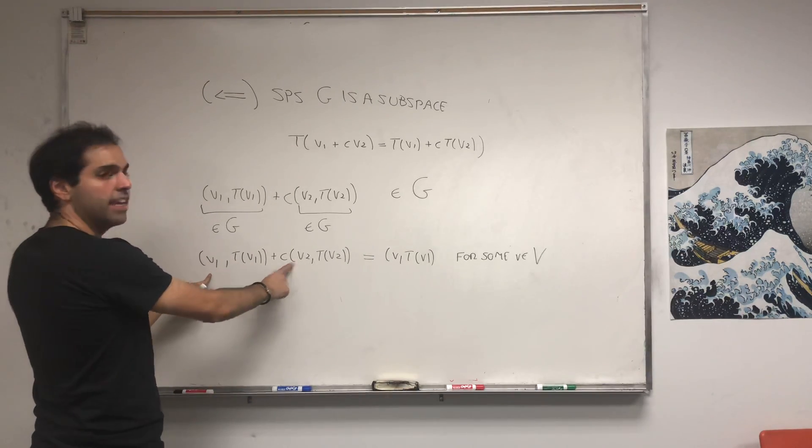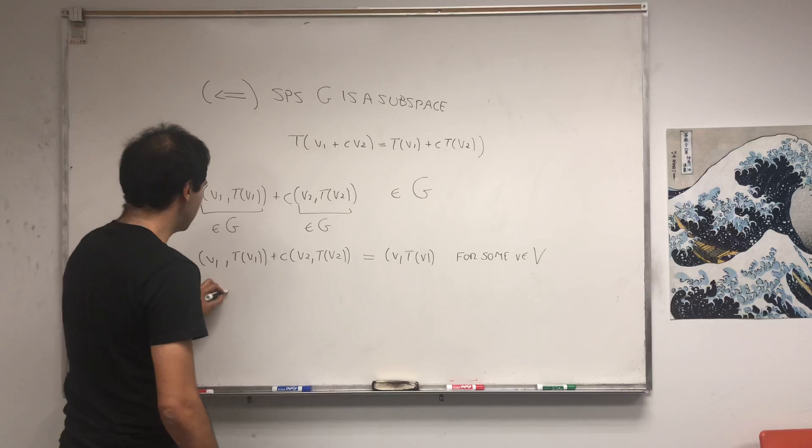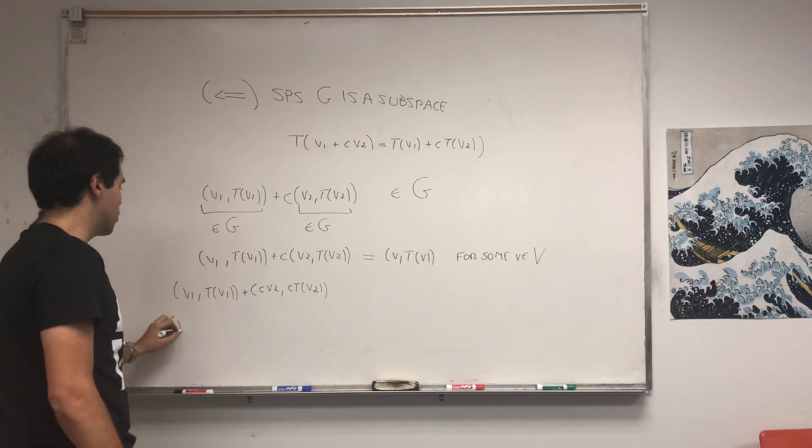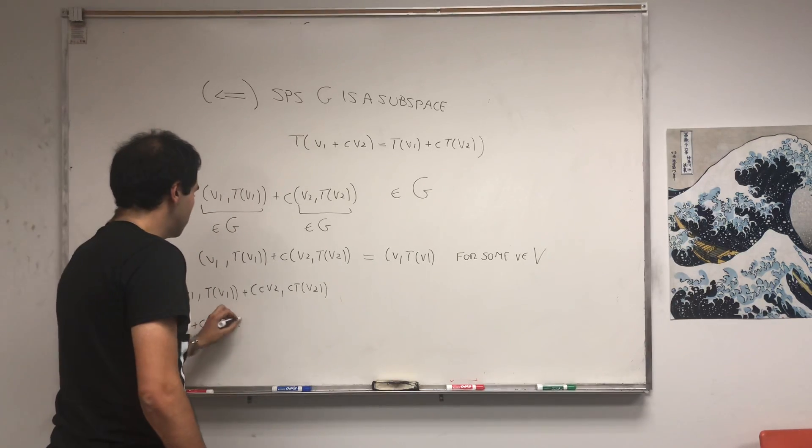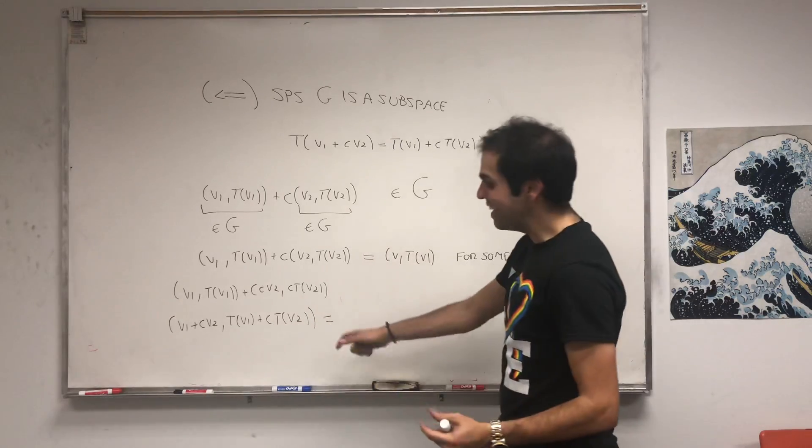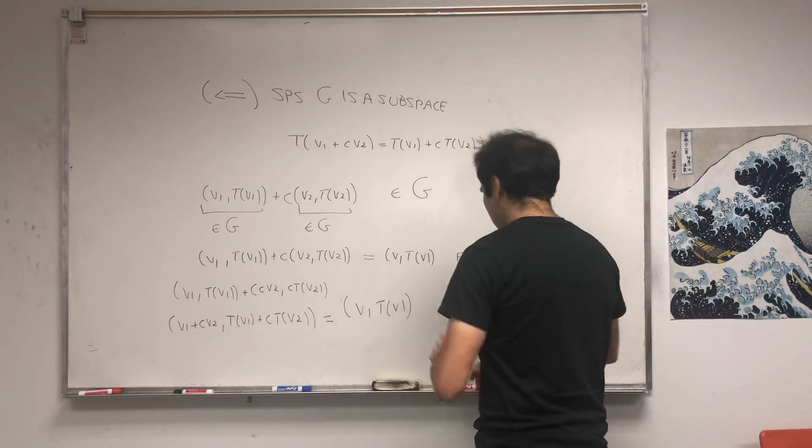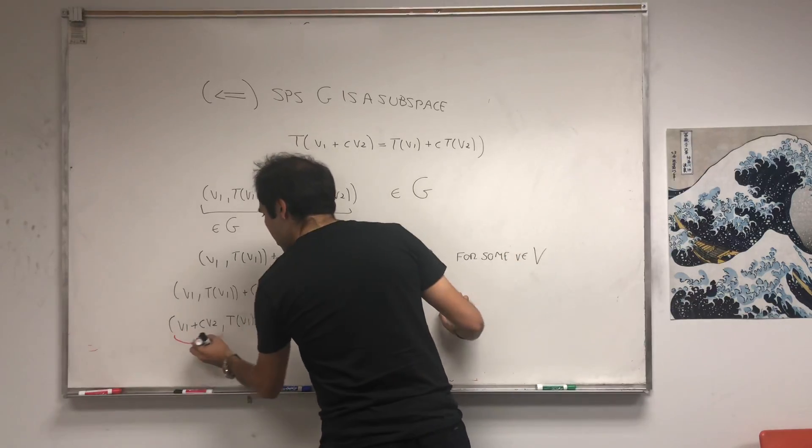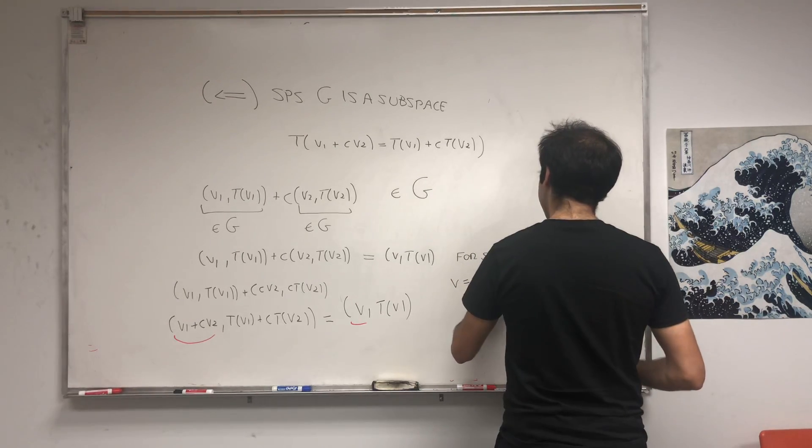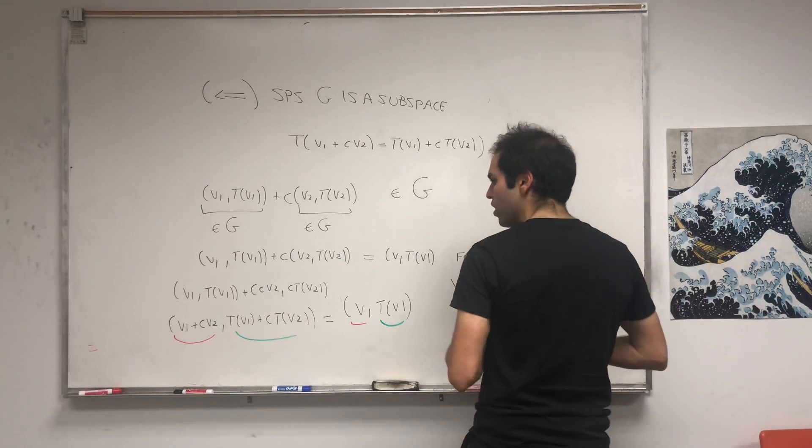Because the definition of adding and multiplying points is you just add or multiply the components. So this is really (v₁, T(v₁)) + (cv₂, cT(v₂)), and that gives you component-wise (v₁ + cv₂, T(v₁) + cT(v₂)). We can't add those things yet because we don't know if T is linear. But what we do know is that it equals (v, T(v)). Let's compare the components. Comparing components tells you we already know what v is: v is v₁ + cv₂. On the other hand, what we get is T(v) is T(v₁) + cT(v₂).